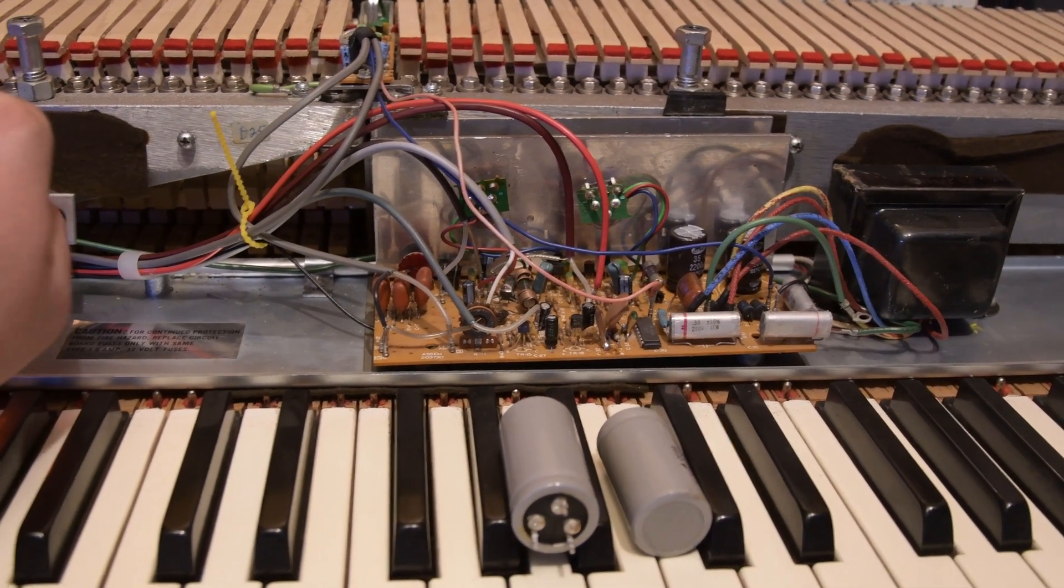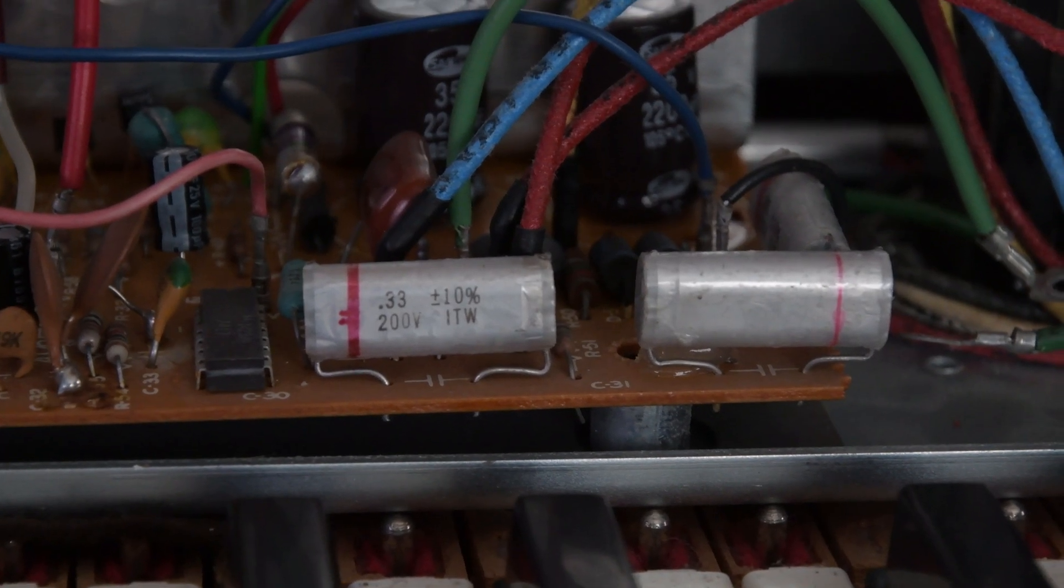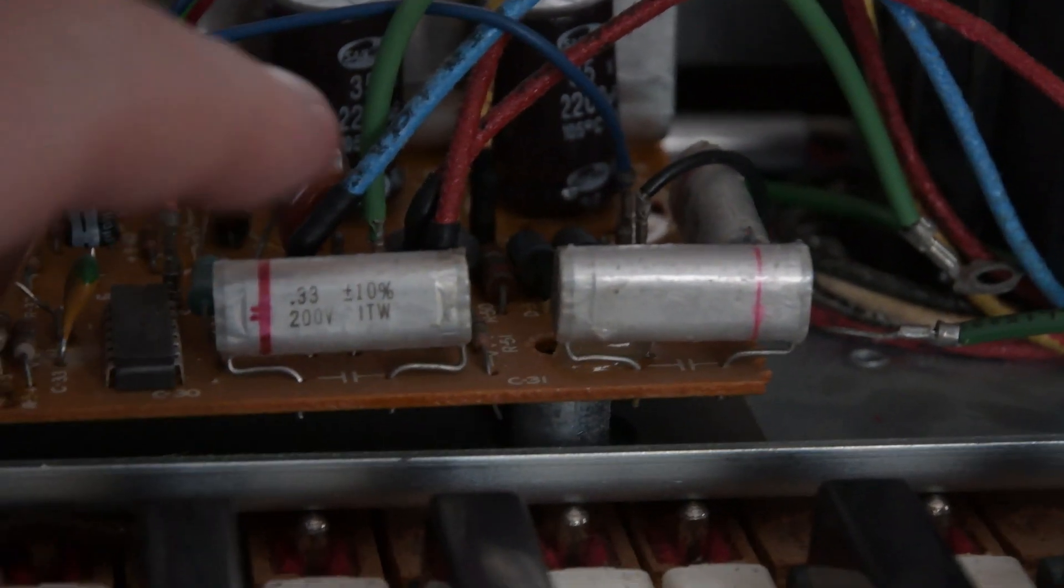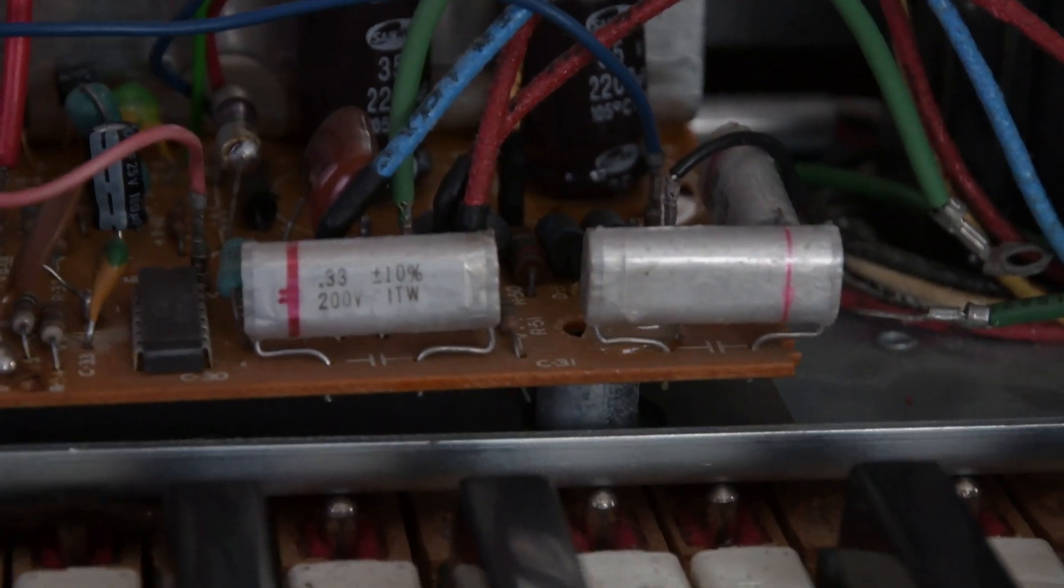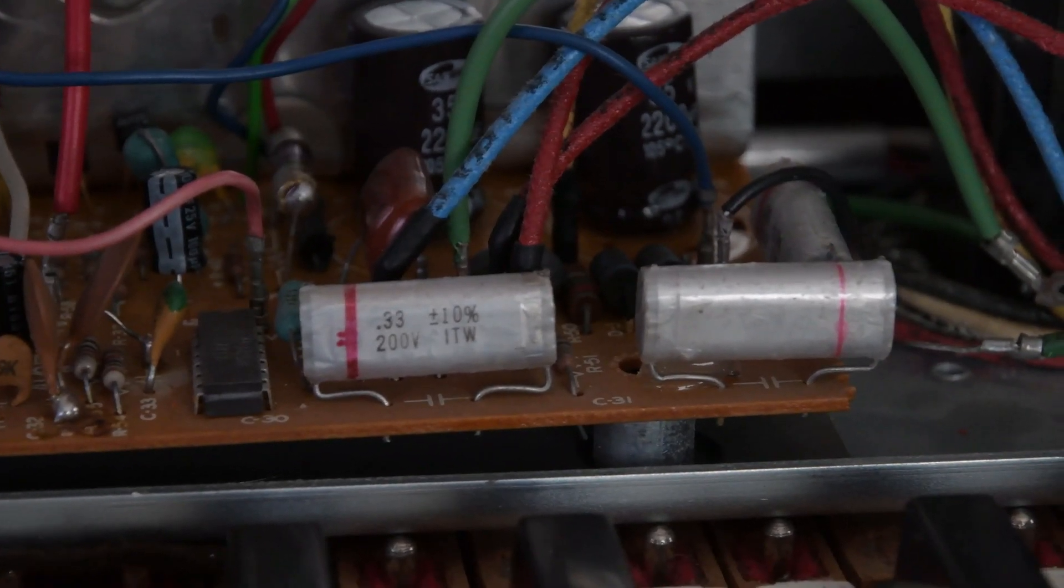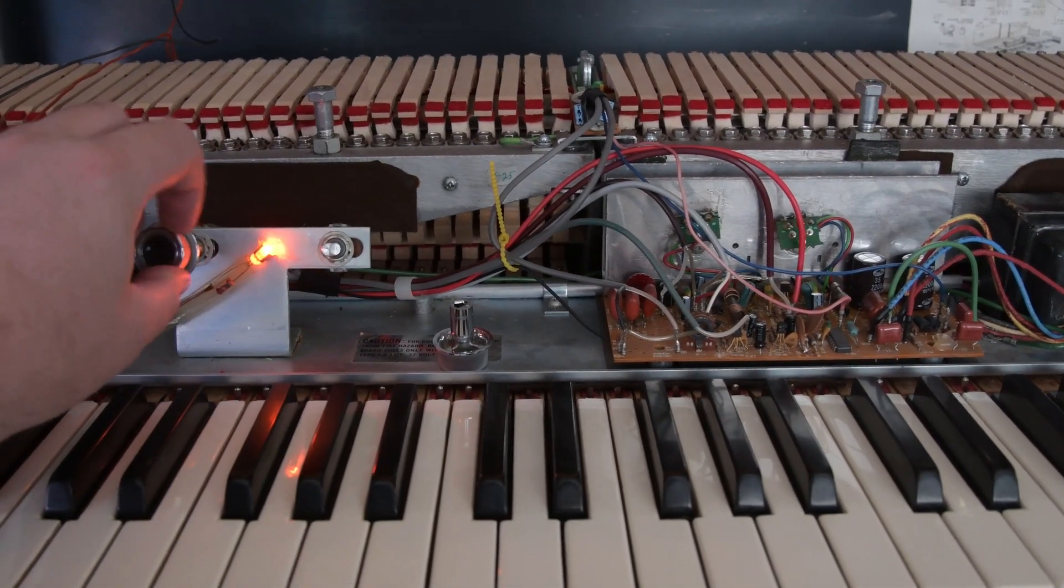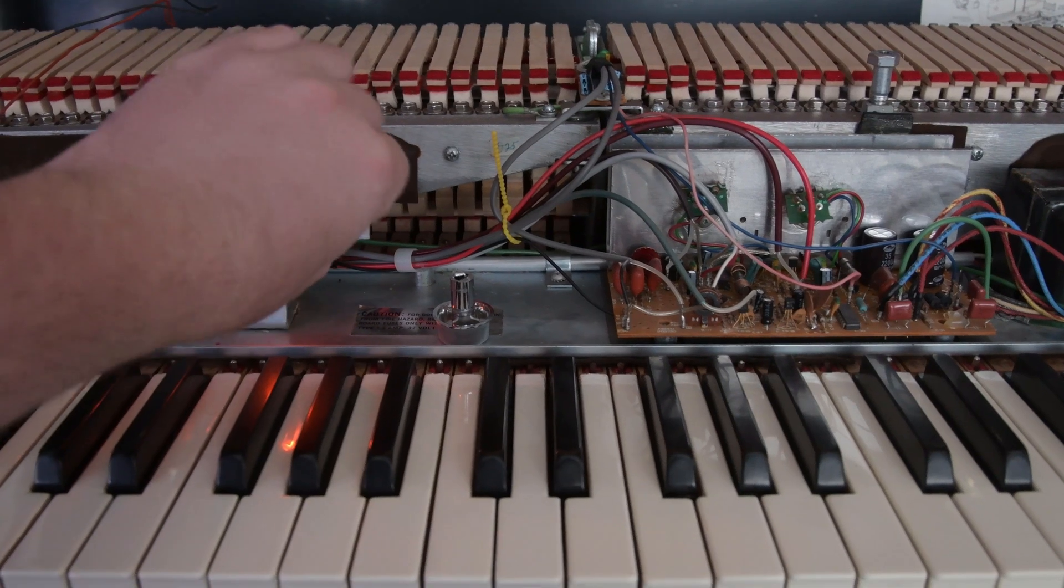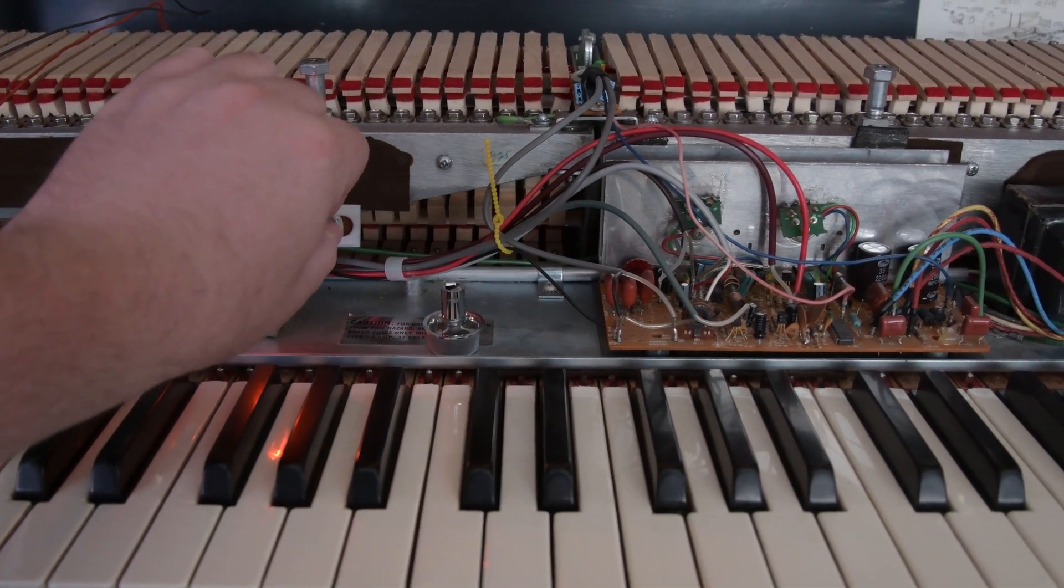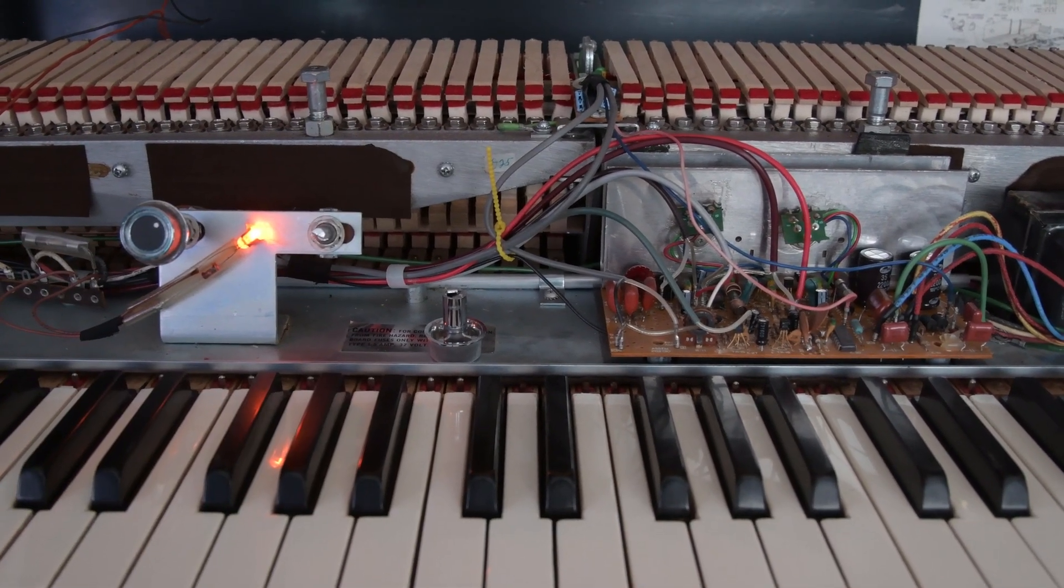Next up we've got the polyester capacitors which filter the 150 volts that sits on the reed bar. I've replaced these with modern equivalents and once more we're still getting plenty of noise. But that's not an issue, still plenty of things to work through and improve with this amplifier.